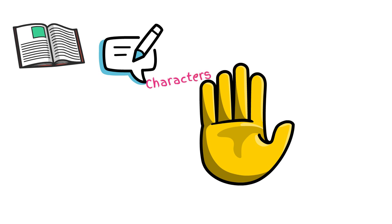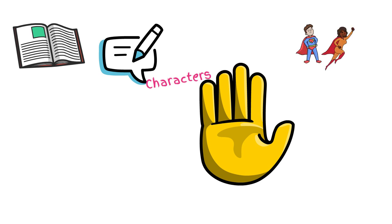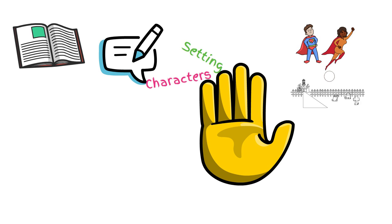The first finger stands for characters, which could be people or pets in the story. This can include the main character or secondary characters. The second finger is the setting, which is the place in the story or where it takes place, and it can include the time of day and more.